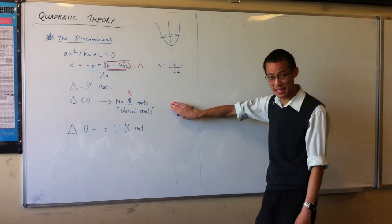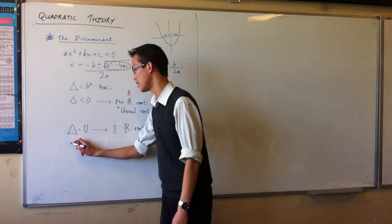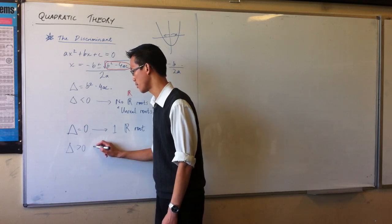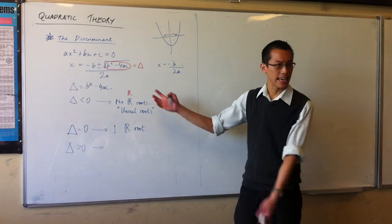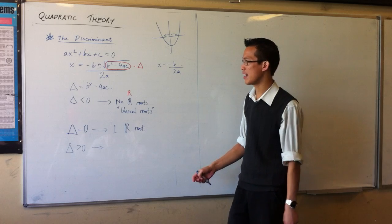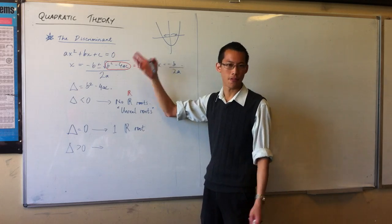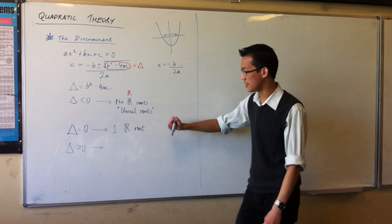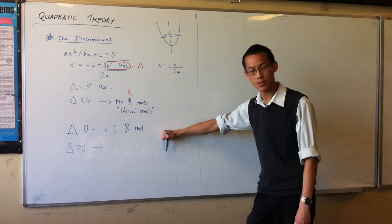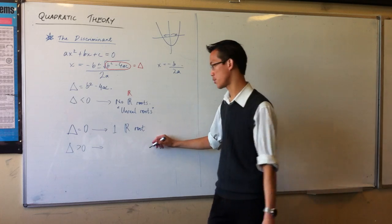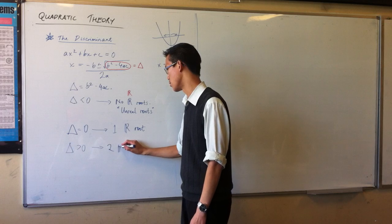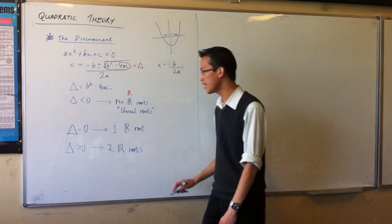So, discriminant less than zero, discriminant equal to zero. The last case is if the discriminant is greater than zero. And that's the case that we're normally used to dealing with. Like if you have the square root of 5. This is, if you like, zero roots, one root. So you would expect it to have two roots. Two real roots.